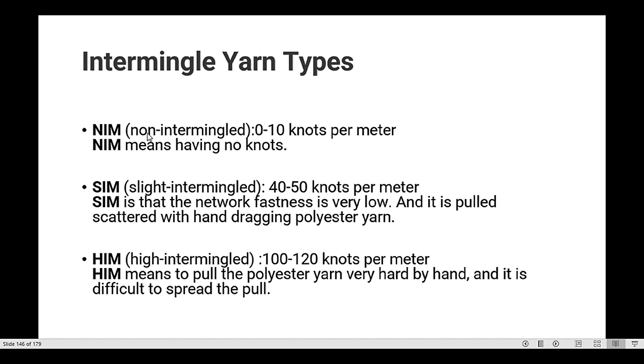Intermingling yarn types: NIP, non-intermingling, 0 to 10 knots per meter. NIP means having no knots. Second is SIM, slight intermingling, having 40 to 50 knots per meter. SIM is where the network fastness is very slow and it is pulled scattered with hand dragging polyester yarn.